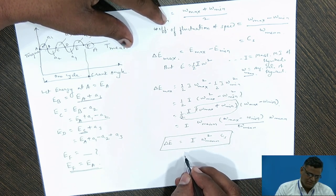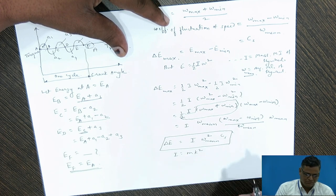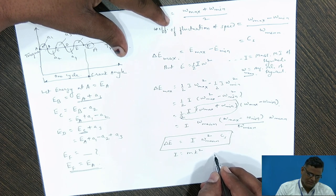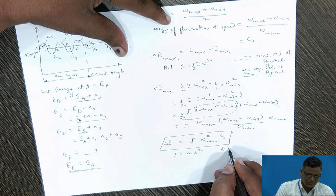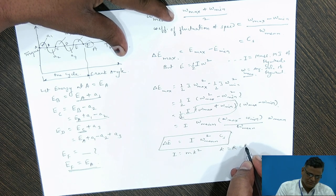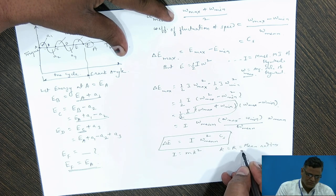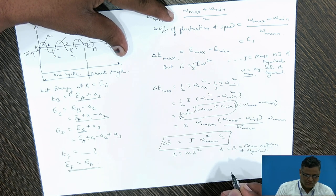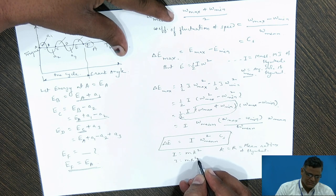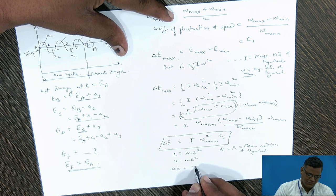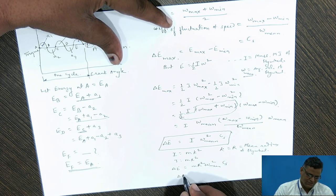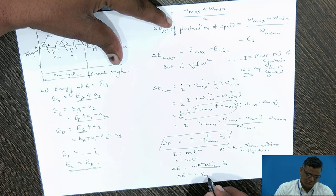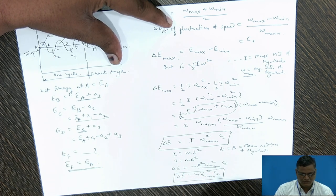The same can be written using I = m r², where m is the mass of the flywheel and r is the radius of gyration, which equals the mean radius of the flywheel. So delta_e equals m r² × omega_mean² × Cs. This can also be expressed as delta_e = m × v_mean² × Cs, where r × omega_mean is the mean linear velocity. This is another form of the maximum fluctuation of energy.